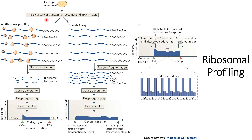Starting with the cells for which we need to do ribosomal profiling: after cell lysis, we first isolate the translating ribosomes and the mRNAs that are not being bound to the ribosome, as shown in the figure. After that, in ribosomal profiling we treat the ribosome-bound mRNA with nuclease treatment.